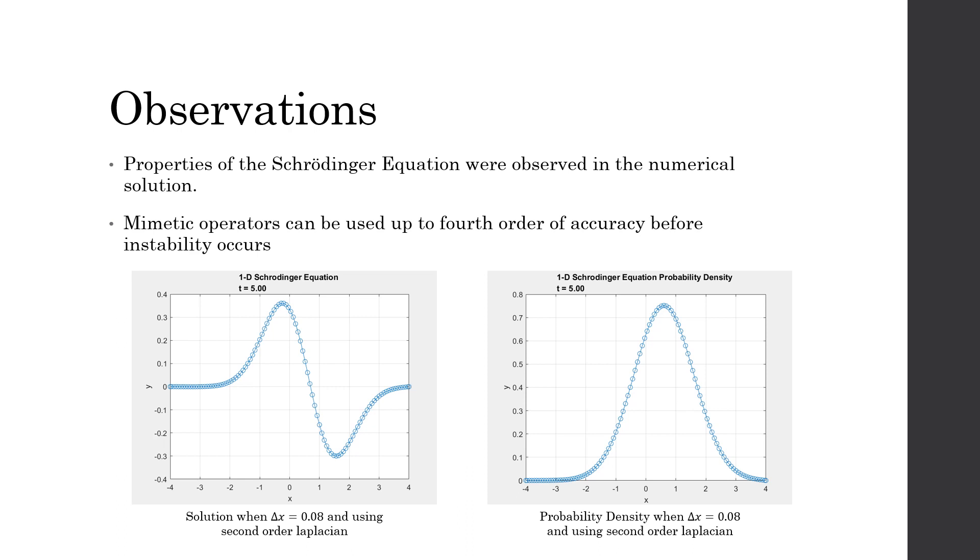However, between using an order of accuracy of two and an order of accuracy of four, the computation time was about the same within margin of error, which shows us that we can go up to a maximum order of accuracy of four and not lose any computation time.